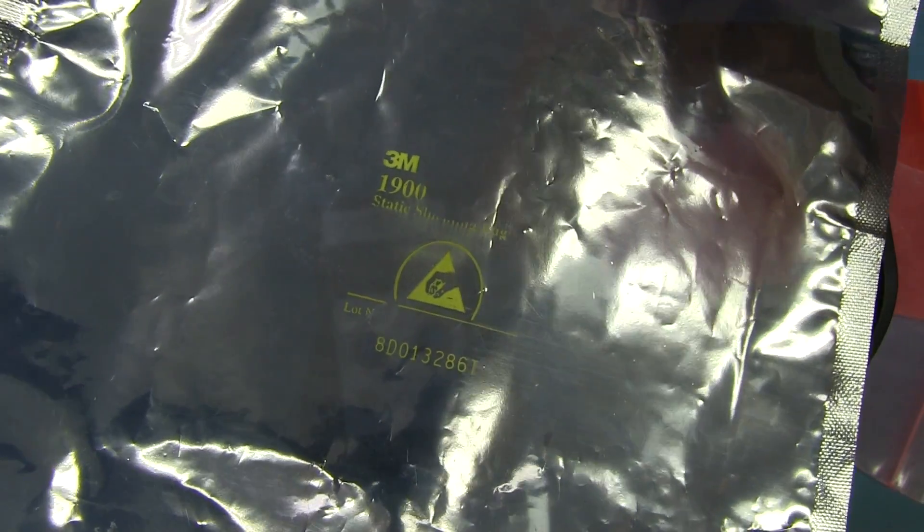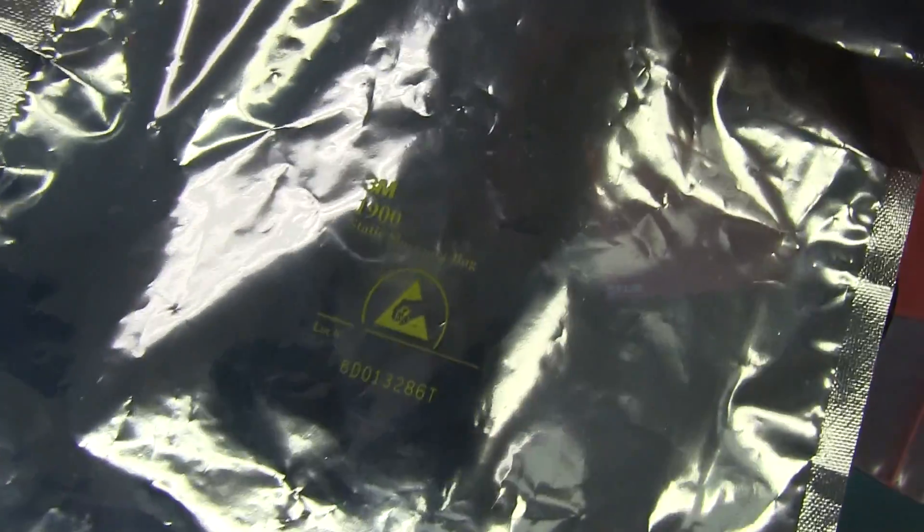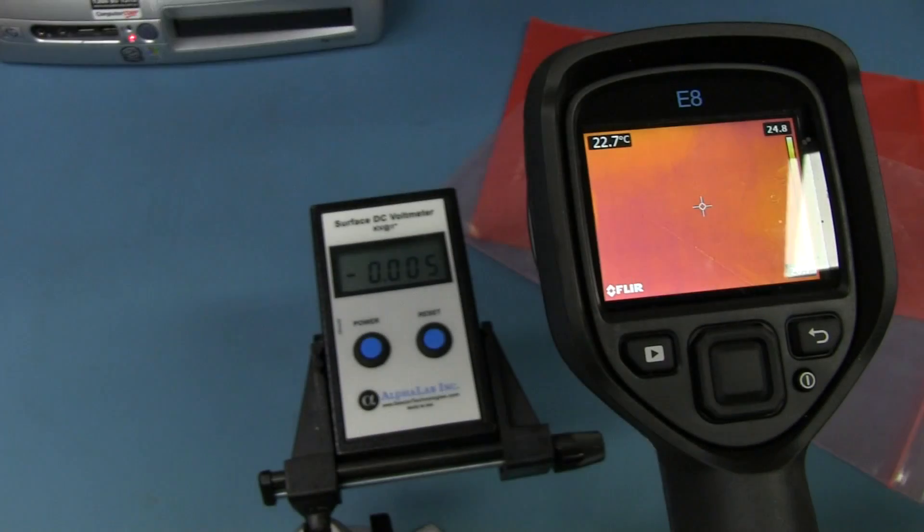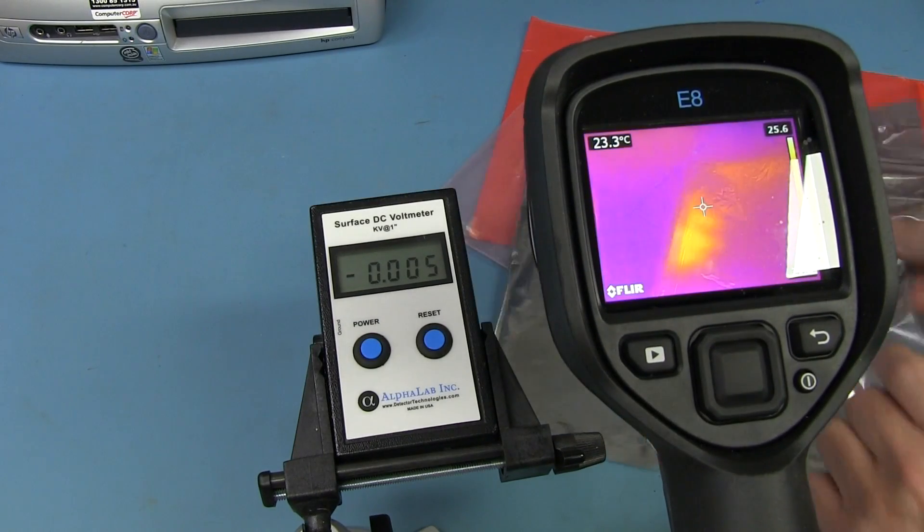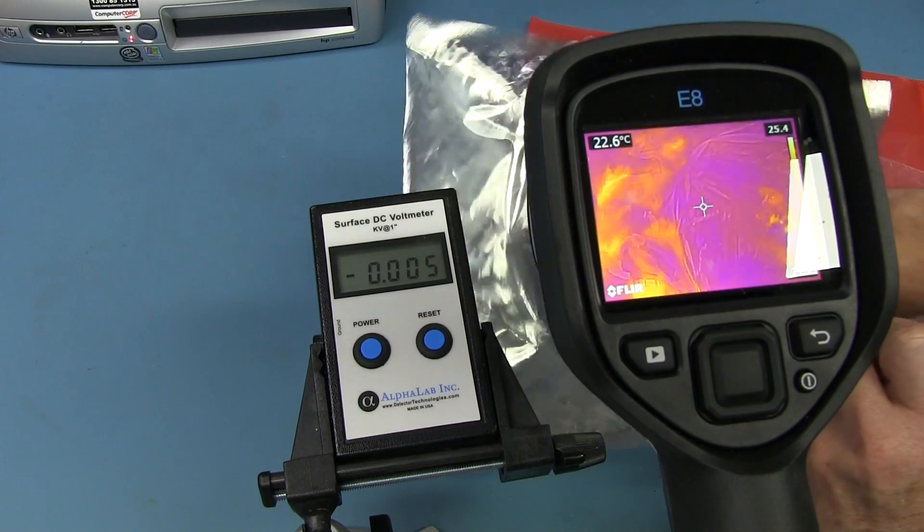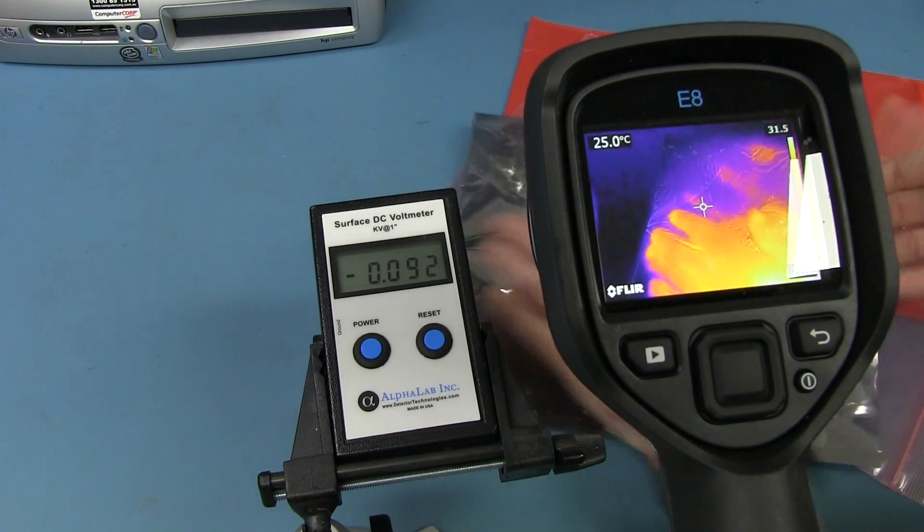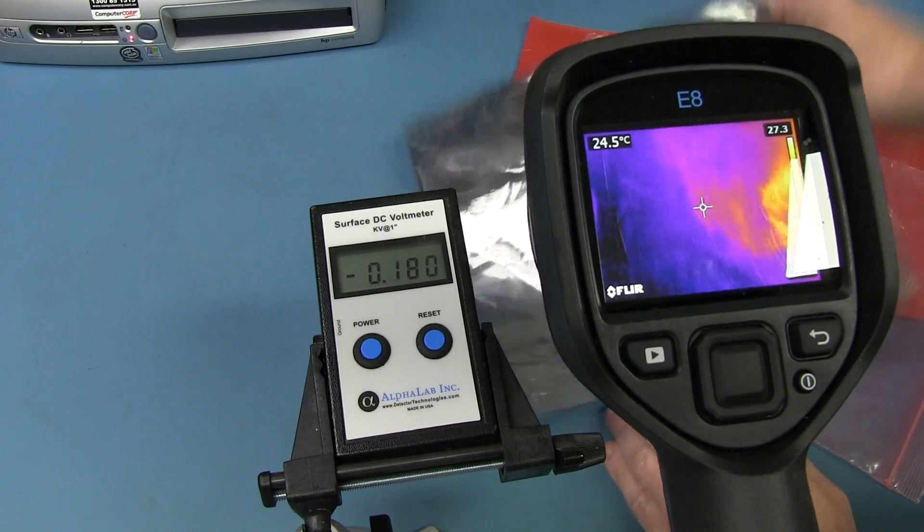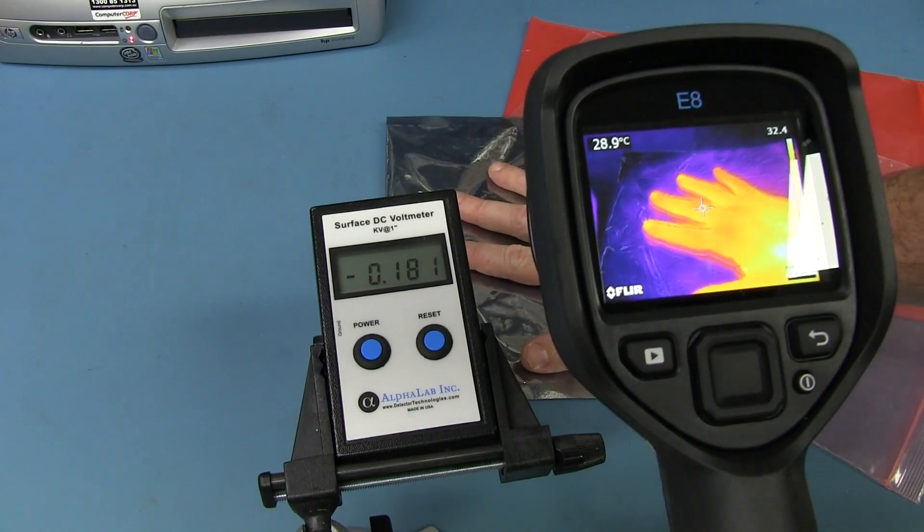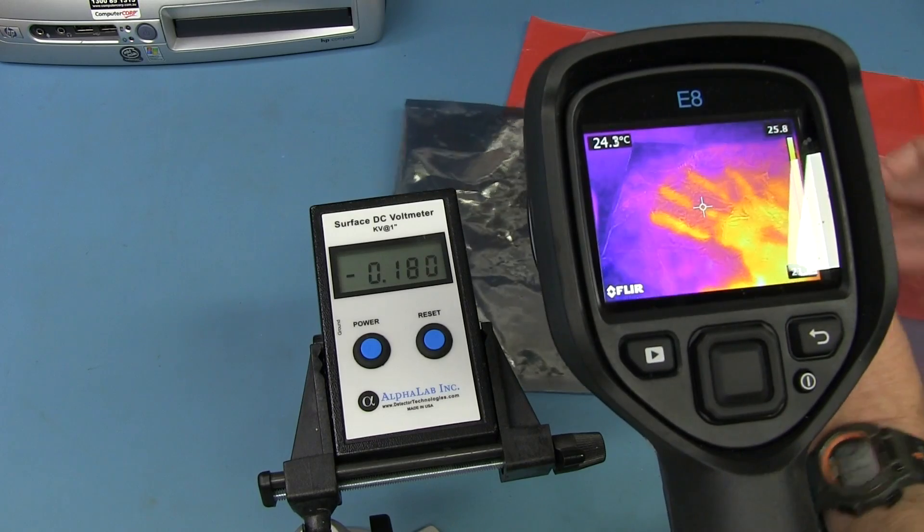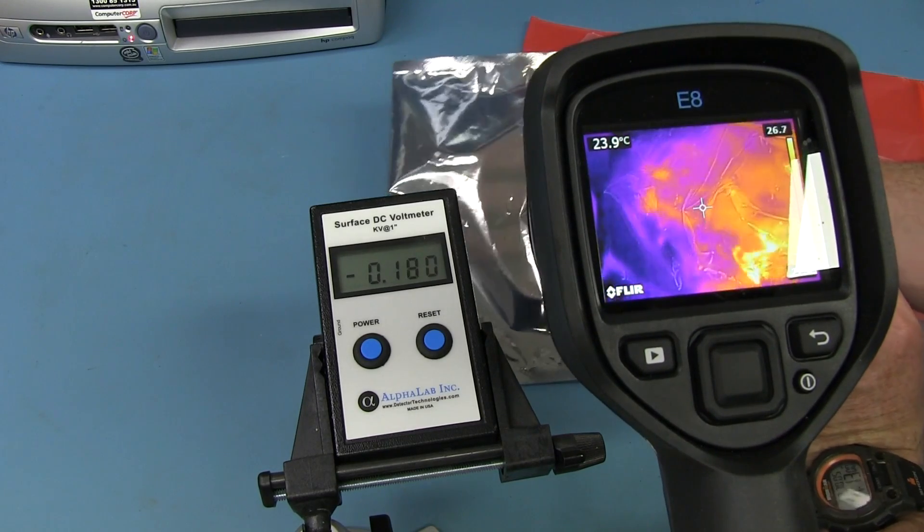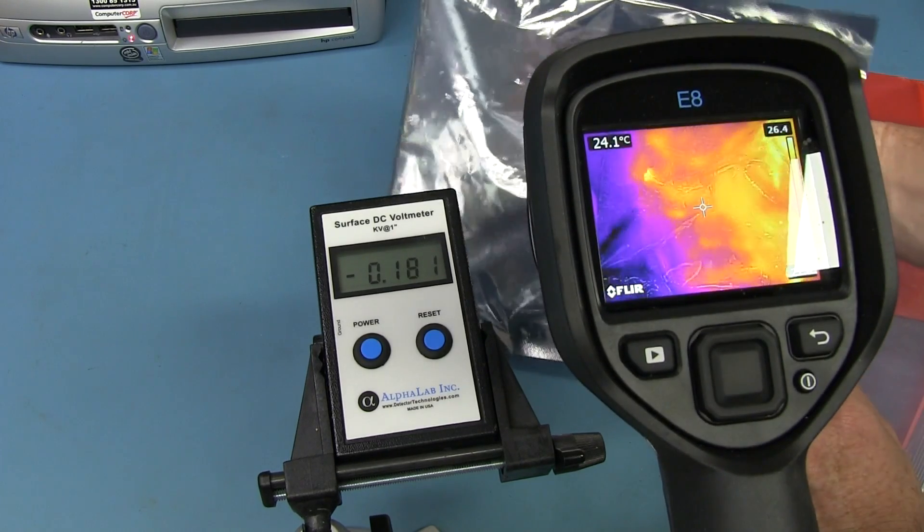And for those who will almost certainly ask, no, these metalized static shielding bags are not thermally transparent. Let's have a look in there. Oh no, that was my handprint. There we go, I can leave my handprint on there. Maybe I can flip it over like that. But no, I can't stick my hand in there. Those are not thermally transparent. Sorry.